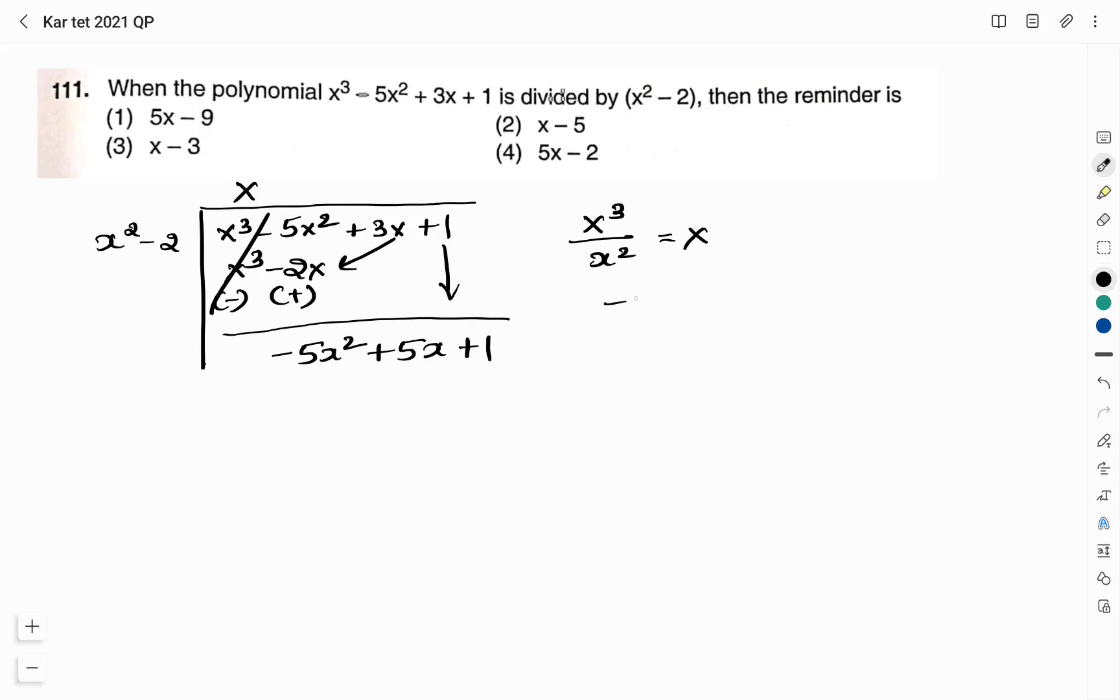Now we have minus 5x square as the first term divided by x square we get minus 5. Write minus 5 as quotient, multiply it to the divisor. It is minus 5x square, x term is not there, so let me write this as 0x in order to avoid the confusion. Minus 5 into minus 2 is plus 10. Change the sign. Minus 5x square and plus 5x square it cancels with one another. We are left with 5x here.